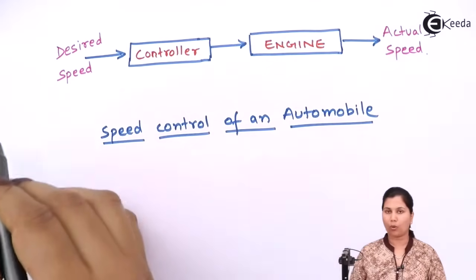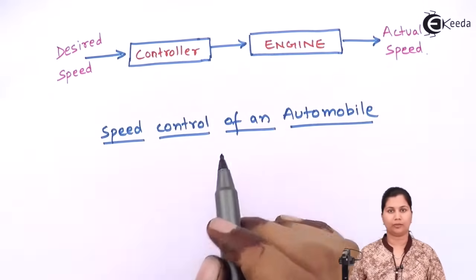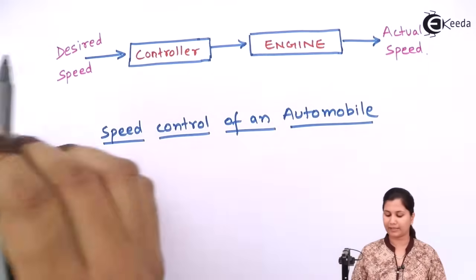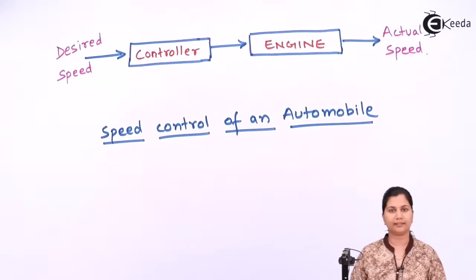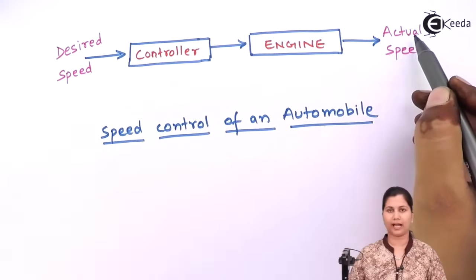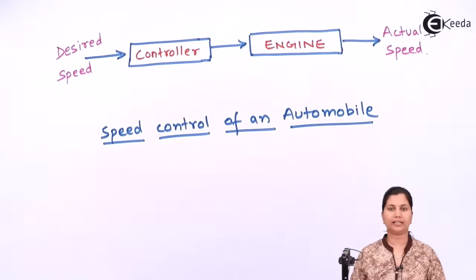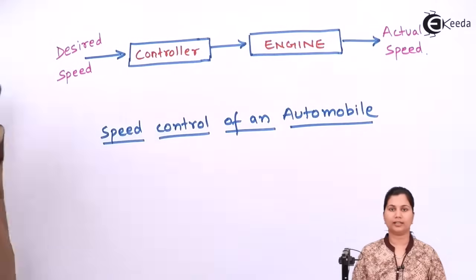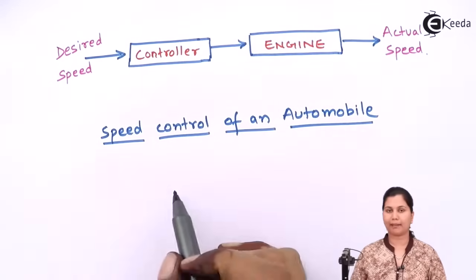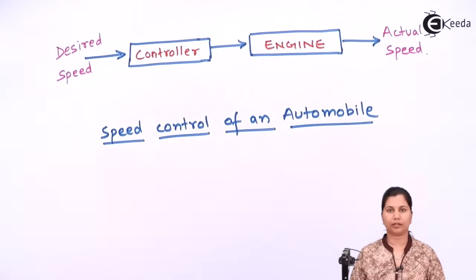This is an open-loop system. There is no feedback structure in this system so that we can have an interpretation of the actual speed and make it close to the desired speed. This is an example of an open-loop control system.